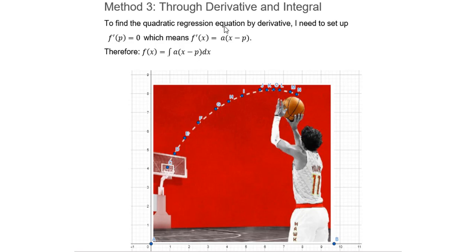To find the quadratic regression equation by derivatives, I need to set up f'(p) = 0, which means p is the x-intercept of f'(x).